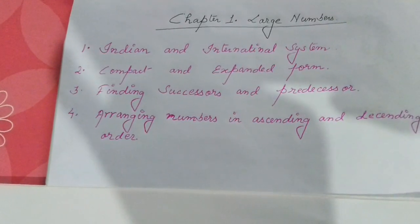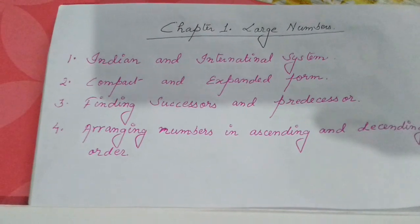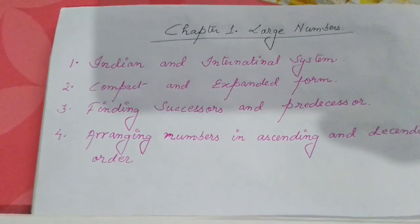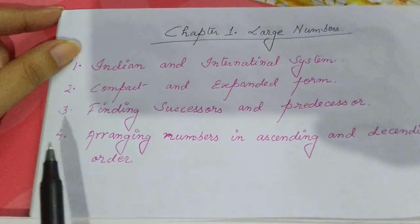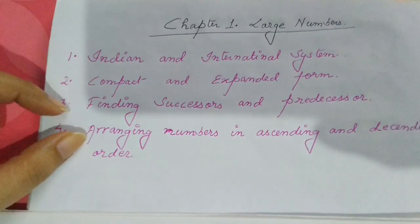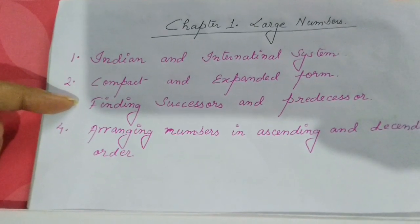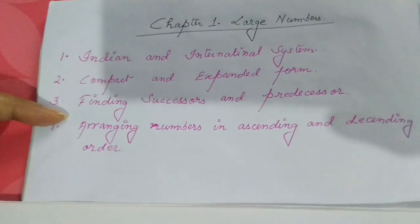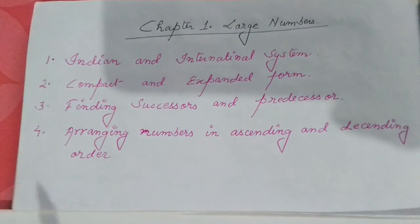Hi students, I am Pooja and today I will be discussing with you the first chapter of standard five maths, that is Large Numbers. In this chapter I have categorized the content into four parts: the first part deals with Indian and international number systems, the second part covers compact and expanded form, the third part covers successors and predecessors, and the last part covers ascending and descending order.